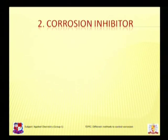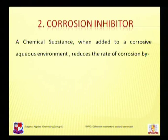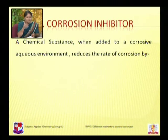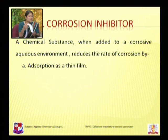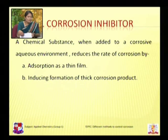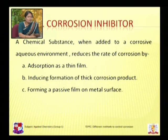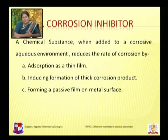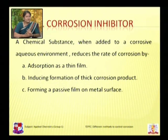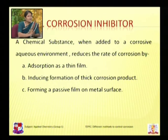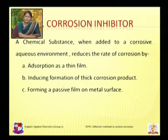We can also use corrosion inhibitors. Corrosion inhibitors are chemical substances which, when added to a corrosive or aqueous environment, reduce the rate of corrosion by absorption as a thin film, by inducing formation of a thick corrosion product, or by forming a passive film on the metal surface. If corrosion is due to the formation of a galvanic or electrochemical cell, the inhibitor tries to retard the corrosion by increasing polarization of the anode or cathode, or by increasing the electrical resistance of the electrolyte. Inhibitors can be inorganic or organic substances.